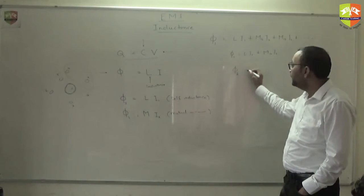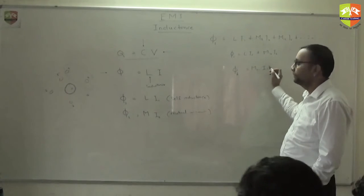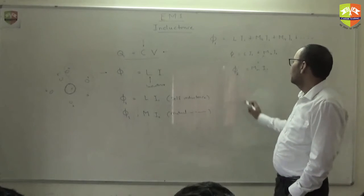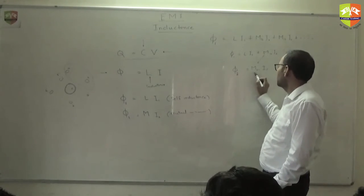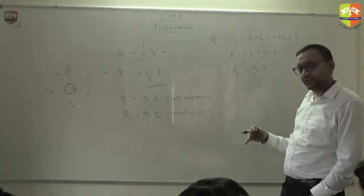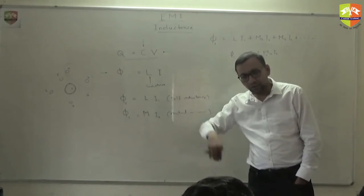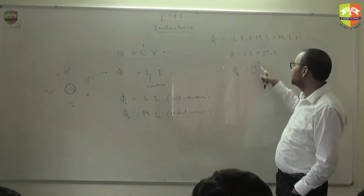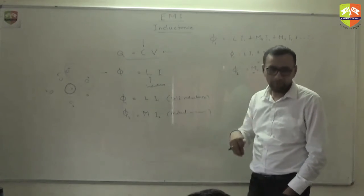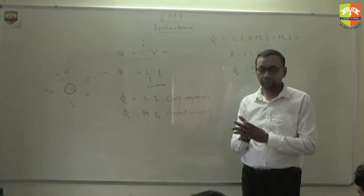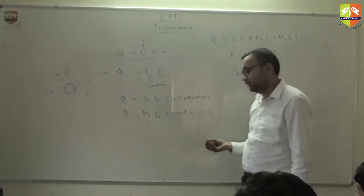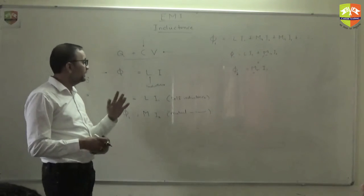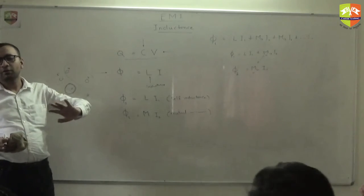The flux in the second coil due to the current in the first coil gives M₂₁, and M₁₂ equals M₂₁ — mutual inductance is the same regardless of which coil's current you consider. Self-inductance is each coil's own property while mutual inductance is a mutual property. Just as capacitance depends only on geometry, shape, and size, inductance also depends only on geometry, shape, and size.